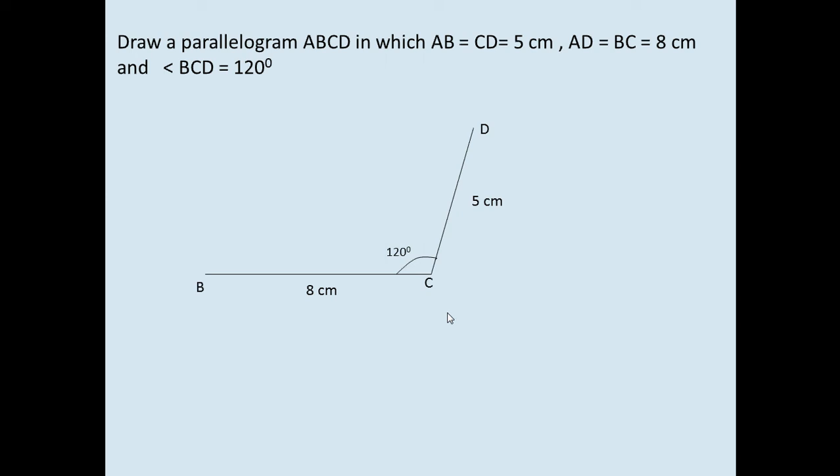After this, we're going to draw another line. As we know, each pair of angles between two parallel sides of a parallelogram sums to 180 degrees. We already have angle BCD at 120 degrees, so angle CBA equals 180 degrees minus 120 degrees, which equals 60 degrees. So we draw angle CBA at 60 degrees.